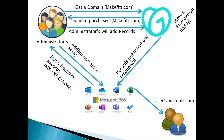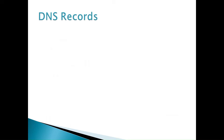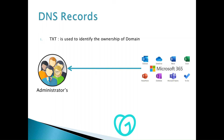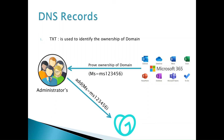Now we will discuss the DNS records and how many types there are to add or verify a domain. First is the TXT record. TXT is used to identify who owns the domain — the ownership of the domain. M365 will ask the administrator to provide proof of domain ownership. M365 provides a value which the administrator copies and adds into GoDaddy (or their domain service provider) as a TXT record.